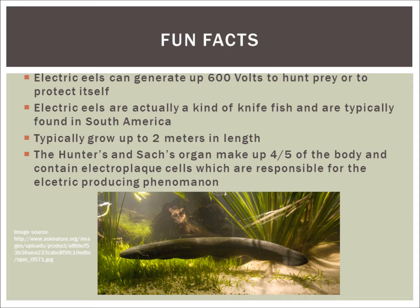And the organs responsible for the electric producing properties are called the Hunter's and Sach's organ and make up 4/5 of the body. These organs contain electroplaque cells which are responsible for the electric producing abilities. As you can see in the picture at the bottom, 4/5 of this animal is fairly large and it's solely dedicated to producing this electric property, which is crazy.